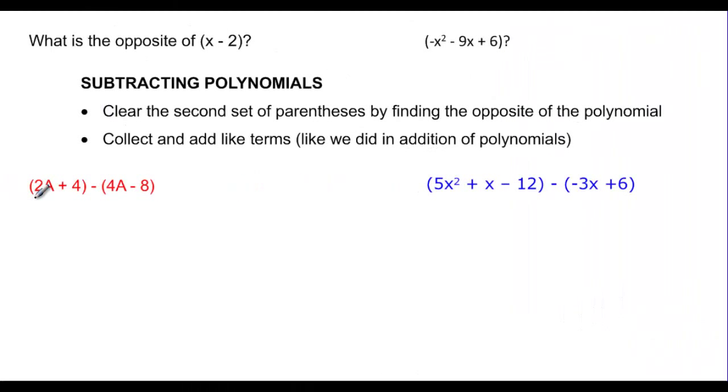Finally, we want to subtract, but before we subtract, we need to think about opposites. So if I want to know what the opposite of x minus 2 is, which by the way would be written the opposite of the quantity x minus 2, then that means that everything inside here has to be the opposite. So the opposite of x minus 2 would be negative x plus 2.